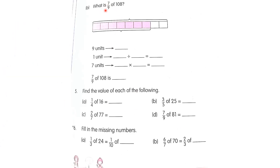Part B: what is seven over nine of one hundred and eight? Find nine units of one hundred and eight. One unit: one hundred and eight divided by nine is equal to twelve. Now we multiply our answer twelve by seven — seven multiplied by twelve is equal to eighty-four. So seven over nine of one hundred and eight is eighty-four.